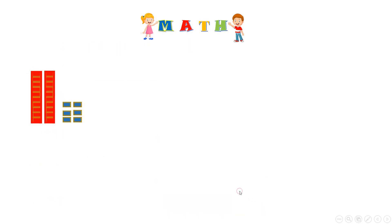Now, if you want to add 1s to the 10s, like this. Here I have 1, 2 tens. 2 tens are 20. Great! And the 1s, let's count them: 1, 2, 3, 4, 5, 6. We have 6. 20 and 6 — it's 26. Great!